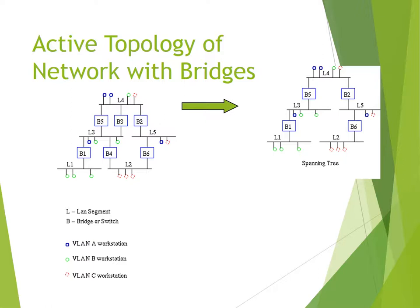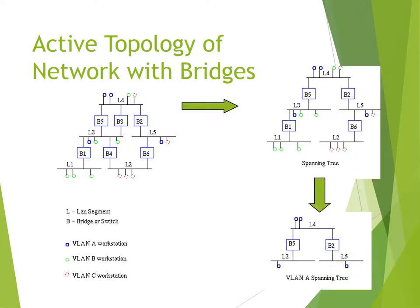Spanning tree for the topology: L1, L2, L3, L4, L5 with associated VLAN bridges. In the diagram below, VLAN A spanning tree covers L3, L5, V5, V2, and L4, showing how they are connected.